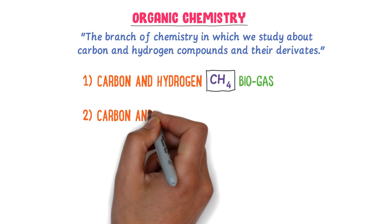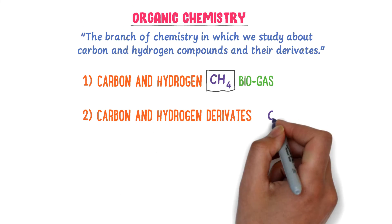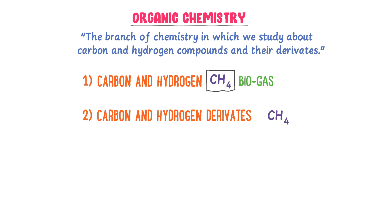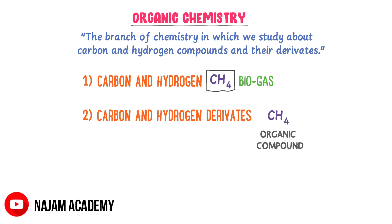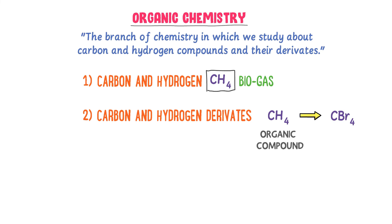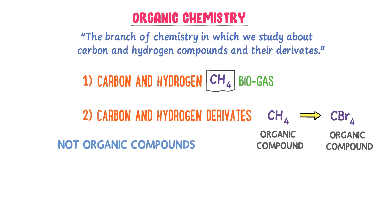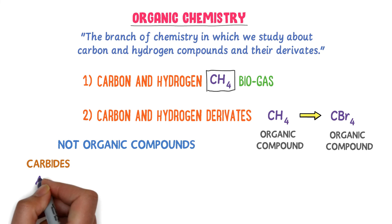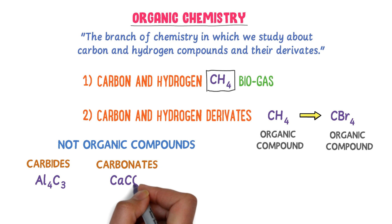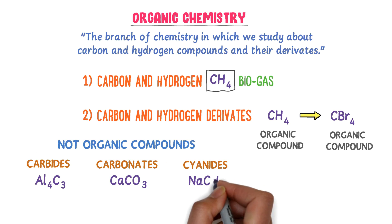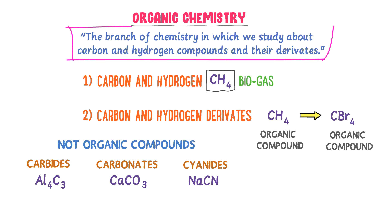Secondly, we study carbon and hydrogen derivatives. For instance, consider CH4 or methane — it is an organic compound, and we can convert it into carbon tetrabromide (CBr4). This means carbon tetrabromide is derived from methane, so it is also an organic compound. Remember that some compounds contain carbon but are not organic compounds — for example, carbides like aluminum carbide, carbonates like calcium carbonate, and cyanides like sodium cyanide. Therefore, organic chemistry is the branch of chemistry in which we study carbon and hydrogen compounds and their derivatives.